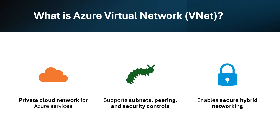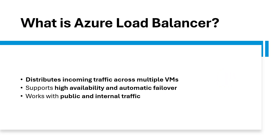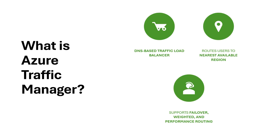What is Azure Virtual Network? It is a private cloud network for Azure services, supporting subnets, peering, and security controls, and enables secure hybrid networking. What is Azure Load Balancer? It distributes incoming traffic across multiple VMs, supports high availability and automatic failover, and works with public and internal traffic.